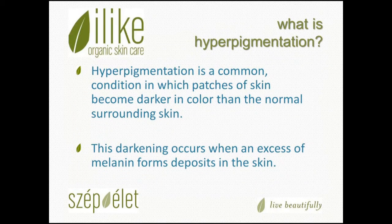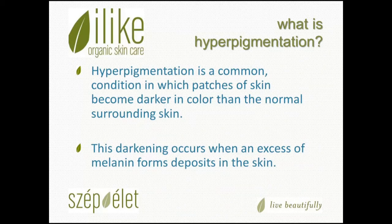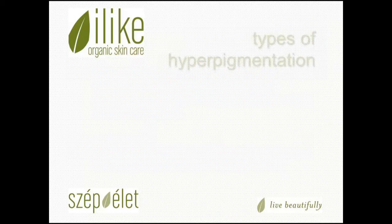So what is hyperpigmentation? Hyperpigmentation is a very common condition in which patches of skin become darker in color than the surrounding skin. The darkening occurs when an excess of melanin forms deposits in the skin. We know a lot of different types of hyperpigmentation.